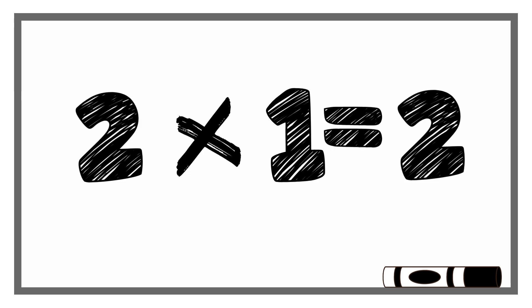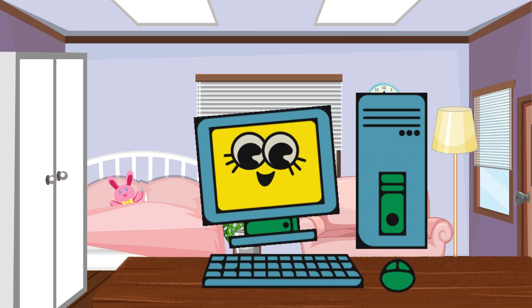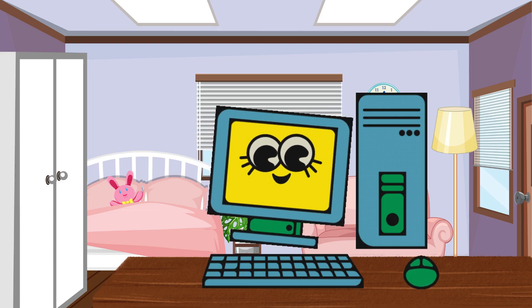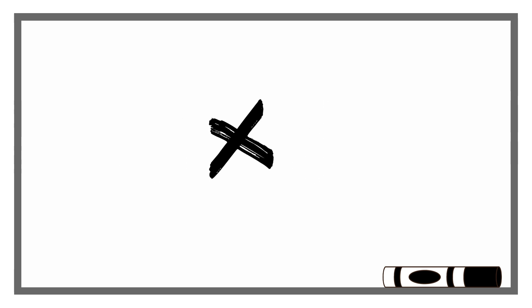What about 2 times 2? That would be 2, 2 times, or 2 plus 2. If 2 plus 2 equals 4, then 2 times 2 equals 4.